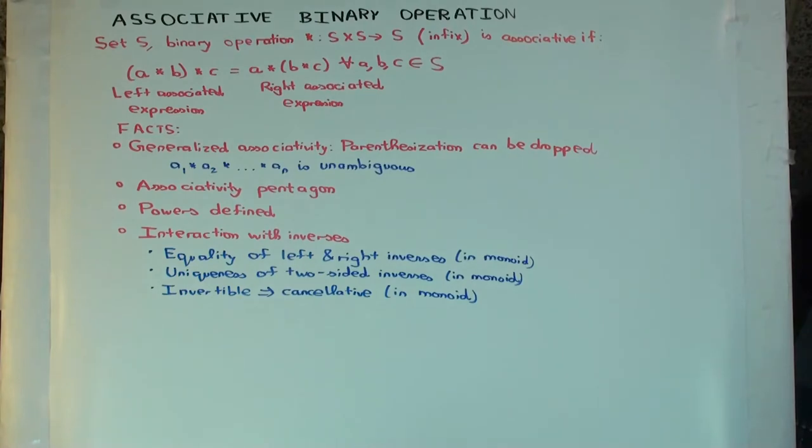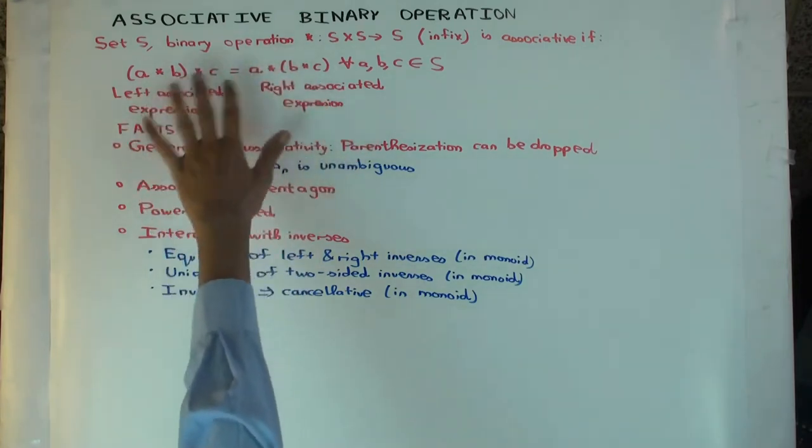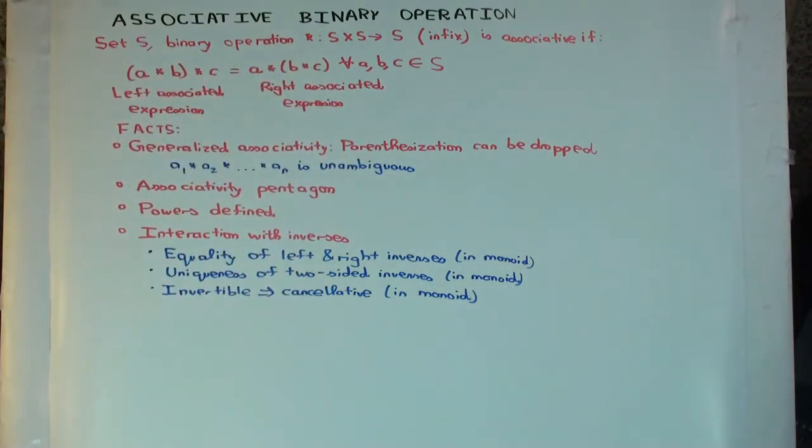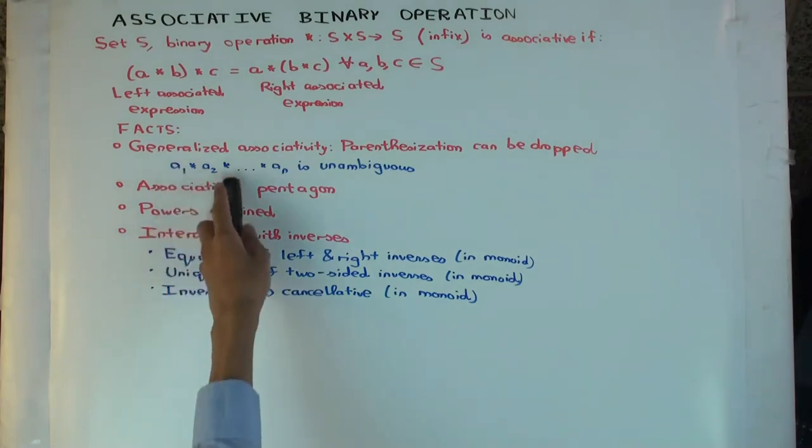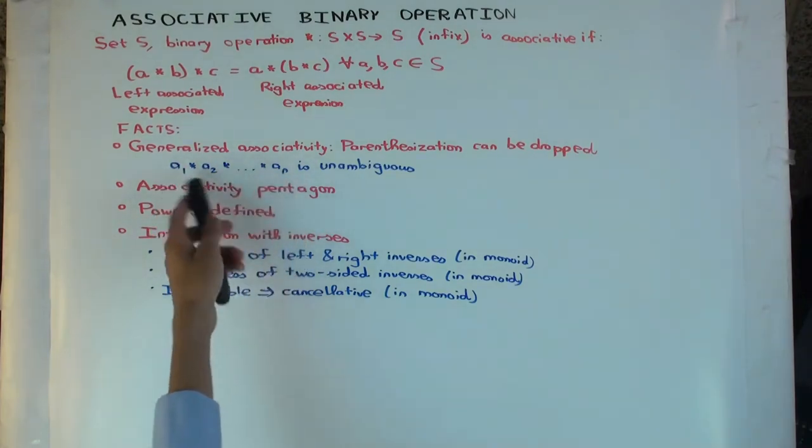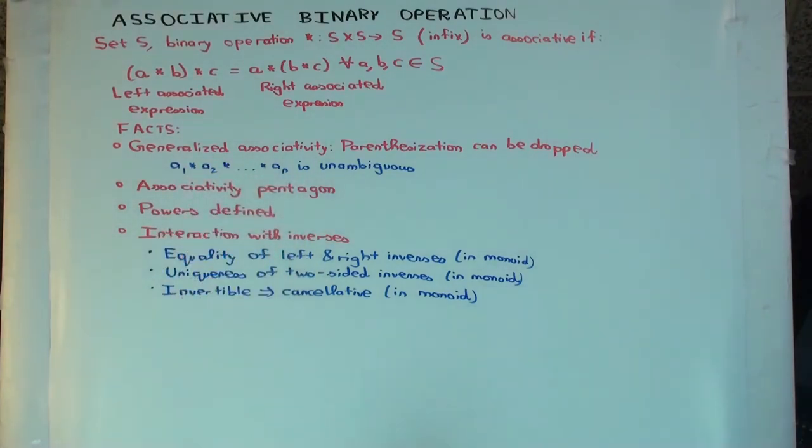So, I want to tell you a few facts about associativity. The first is that associativity of triples, that's what I've written here, actually implies associativity of arbitrary length things. It's called generalized associativity. What this says is that if I have any product of any number of things, then I don't have to specify the parenthesis. For example, I have a product of four things.